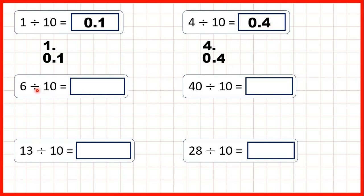Now, 6 divided by 10. We write out the number 6 with the decimal point at the end, and copy down the decimal point. We're dividing, so the digits are going to move to the right. We're dividing by 10, which has one zero, so the digit moves one square to the right. If we have an empty ones column, we need to write a zero. So now we have our answer: 0.6.